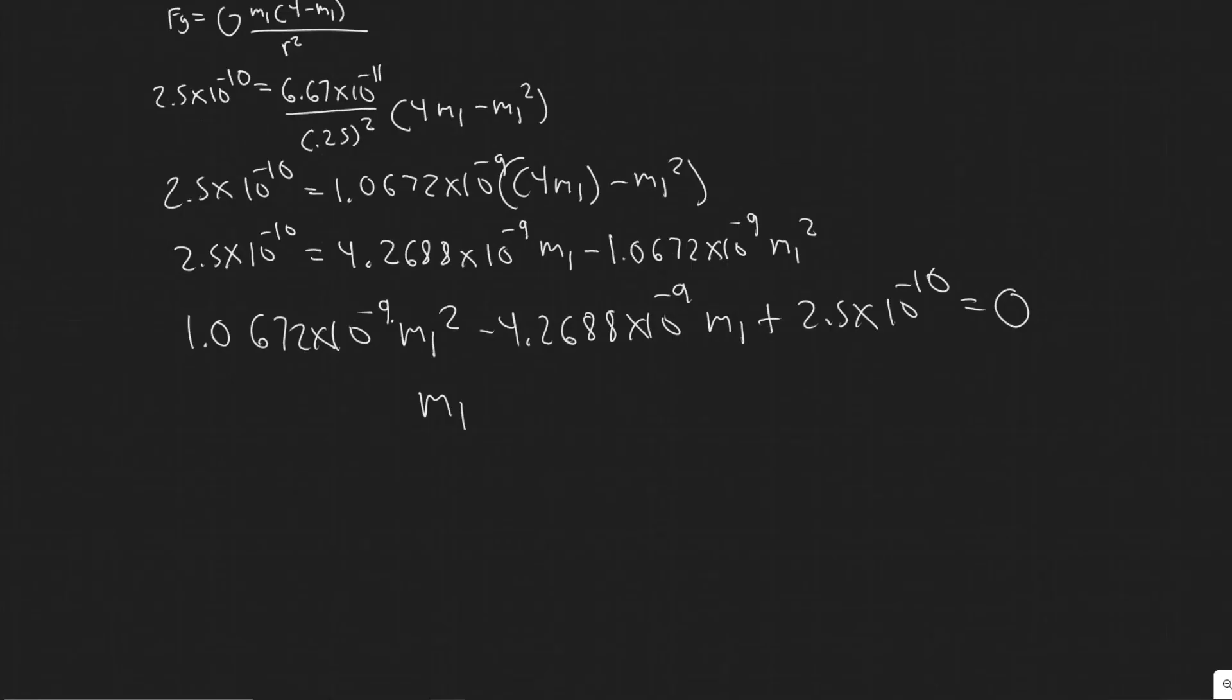So I'm just plugging it in now. So we have that x plus 2.5 times 10 to the minus 10. And then let me make sure this is right. Just checking it. Yeah, so it should be good. Graphing it. We're just going to find where it crosses zero now. Let me zoom in.